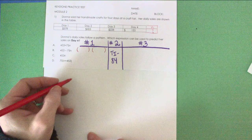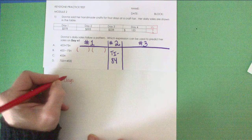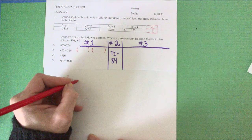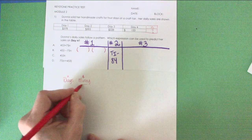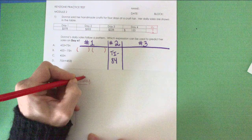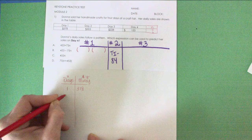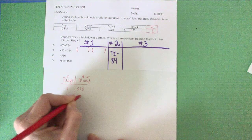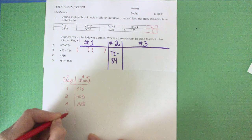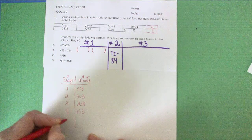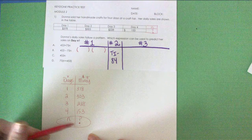If you were to make this table vertical, it would look something like this. Your days might be here as the X, and your money that Donna made would be the Y. So on the first day she made $378, on the second day $303, third day $228, and on the fourth day $153. We're looking for some kind of equation that will give us the nth day's earnings.